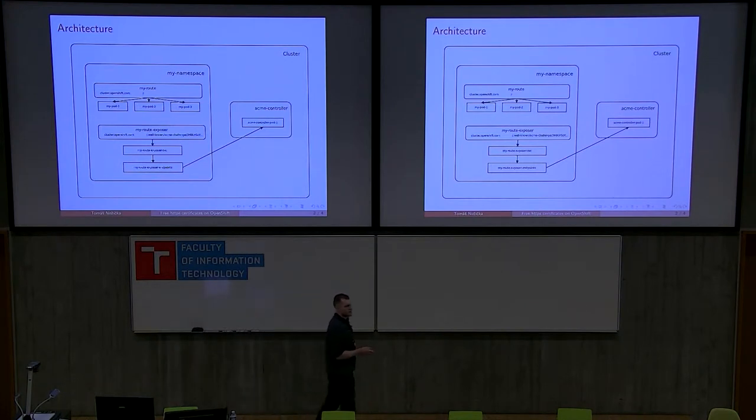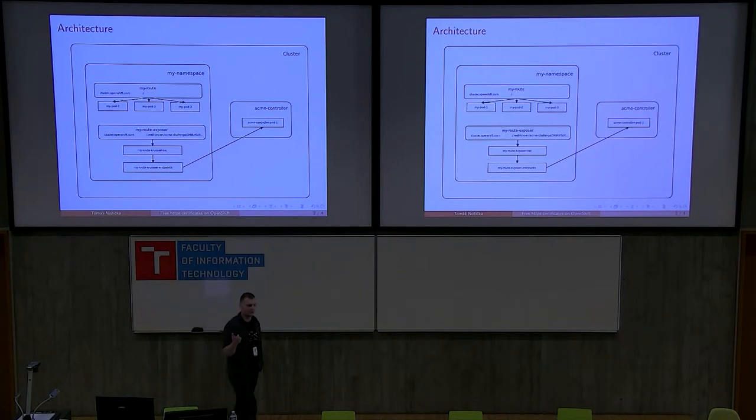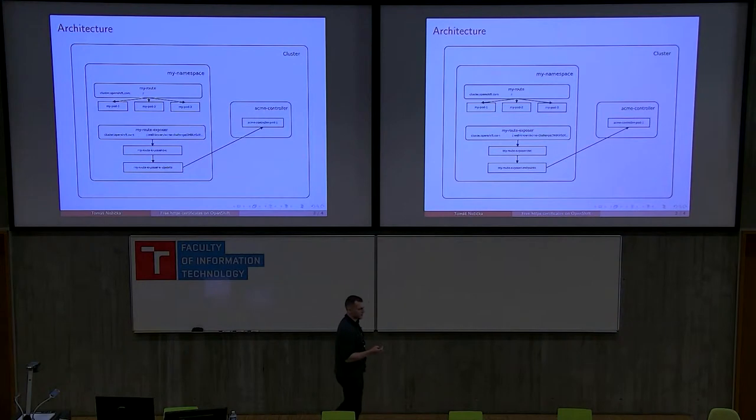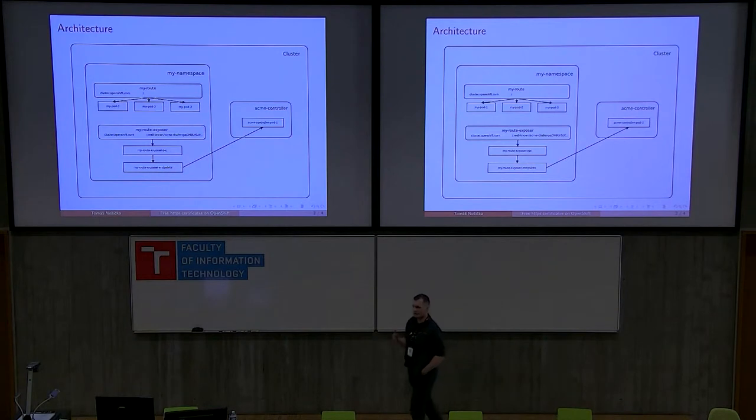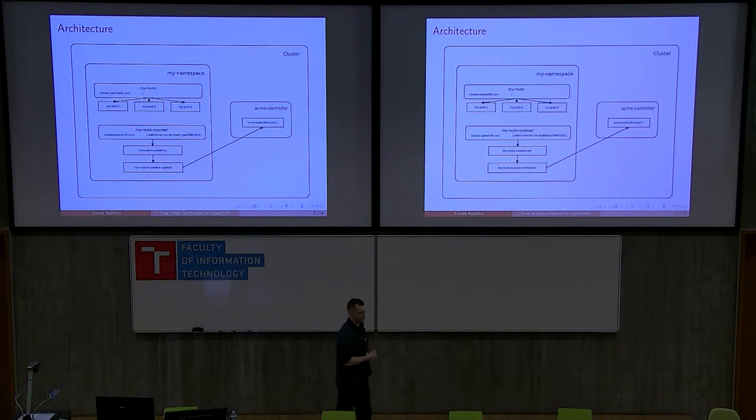I actually started implementing it, and it turned out you can't just direct traffic for a route to another namespace, which is a bit problematic because our controller is running in a different namespace. We can't just create a route in the namespace where the controller is because there is this rule where only one namespace can claim a host, because otherwise in a multi-tenant environment users could just steal their traffic, which wouldn't really work. So we need to create a route where the actual user route is.